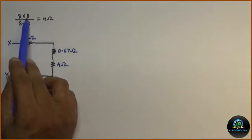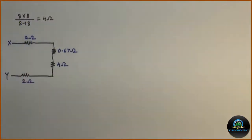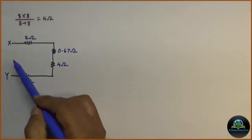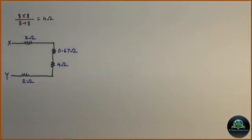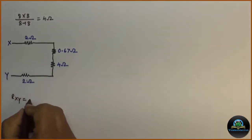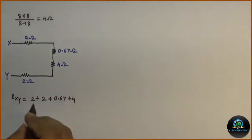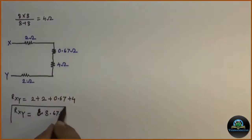This is my 4 ohm resistance which is converted by parallel combination of two similar resistances of values 8 ohm and 8 ohm. In the modified circuit all resistances are connected in series across X and Y. Hence we will get Rxy is equal to 8.67 ohm which is equivalent resistance calculated after using star delta conversion technique.